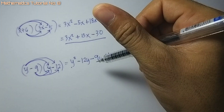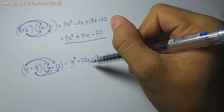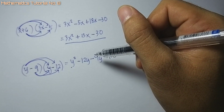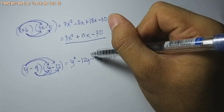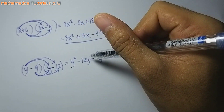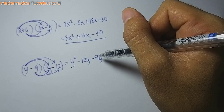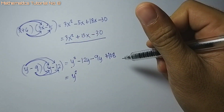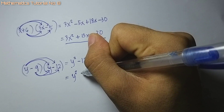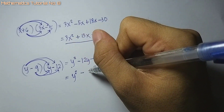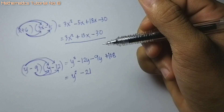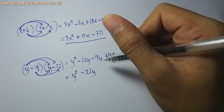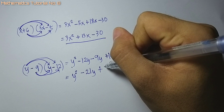So sunod ang rule na atong i-combine ang parehas o similar terms. Naan na parihas of terms: negative 12y og negative 9y — parihas man sila, pareha og sign negative, so i-add lang: negative 21. Copy the variable y. Plus 108. So ang product: y squared minus 21y plus 108.